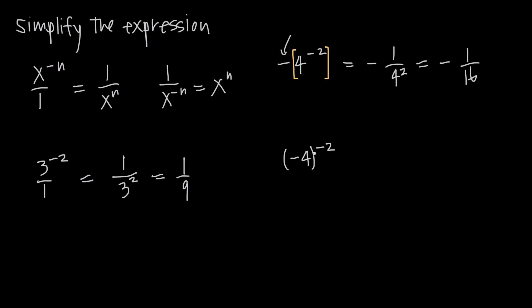Here though, because the negative sign is inside the parentheses, it tells us that we have to keep this negative with the 4. So what this simplifies to is 1 over negative 4 to the positive 2. So we change the sign on the exponent from a negative to a positive when we move this whole thing to the denominator. The parentheses tell us to bring the negative along with the 4 into the denominator.